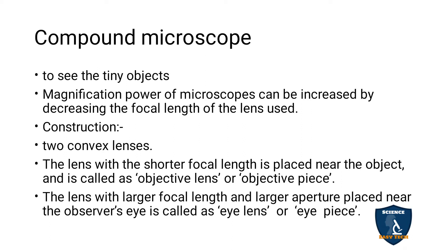Why are we using this compound microscope? To see minute particles with a magnified version - that is magnification power. So to see small particles which cannot be seen through our eyes, they can be seen through the microscope in an enlarged form, showing all the parts and structure. For that purpose we are using this compound microscope - to see tiny objects.